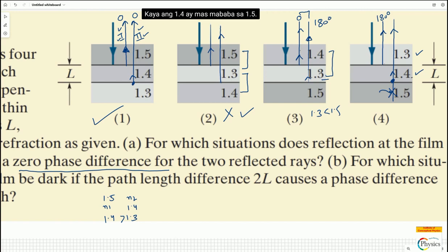So 1.4 is less than 1.5. So again, 180 degree difference created between these two, no phase difference will be there. So situation number 4 is also right.